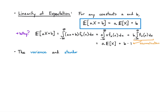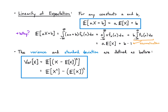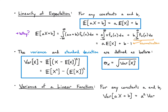The variance and standard deviation are defined in exactly the same way as before. The variance is the expectation of (x minus its mean) squared, which can also be written as E[X²] minus the square of E[X]. The expectation is defined in terms of an integral, but we reuse the same abstract definitions. The standard deviation is the square root of the variance. For a linear function, the variance of aX + b is a² times the variance of x — the shift b is ignored.